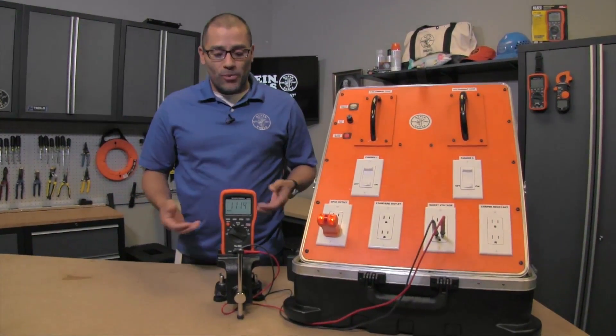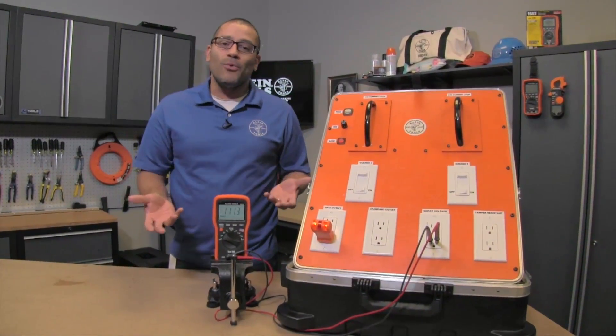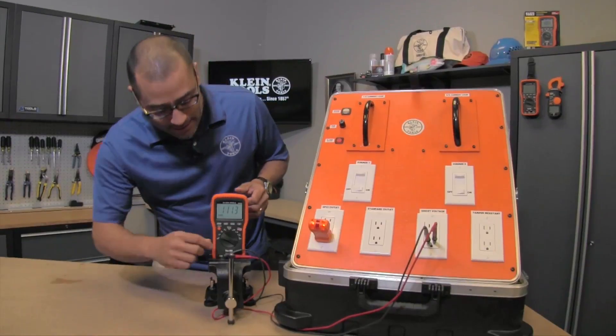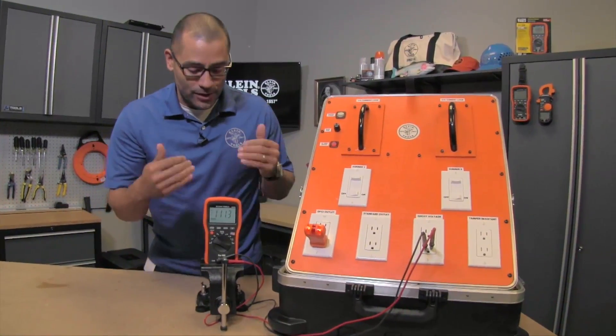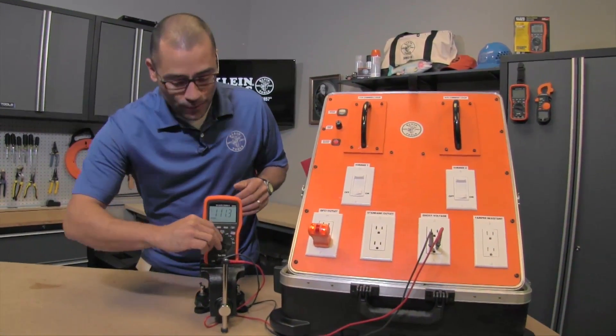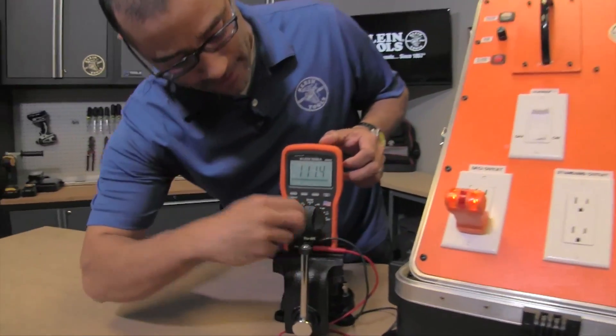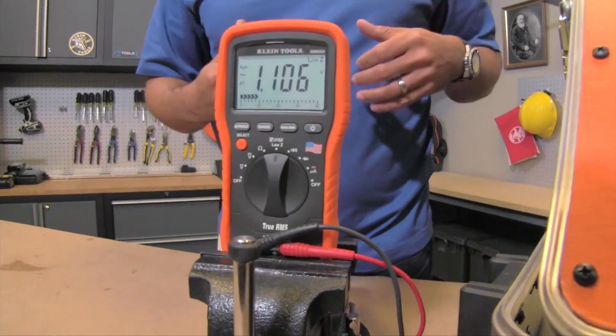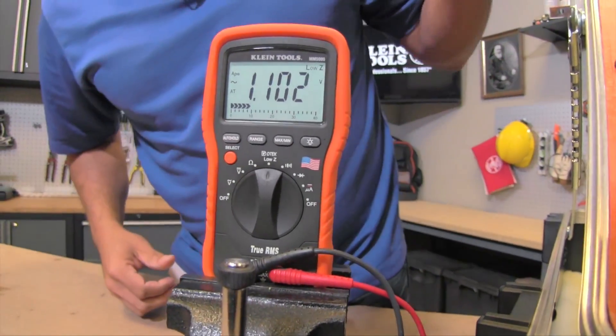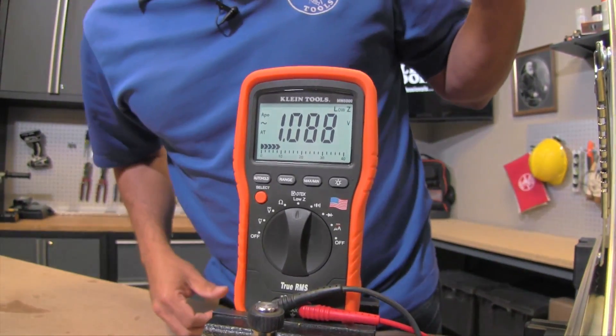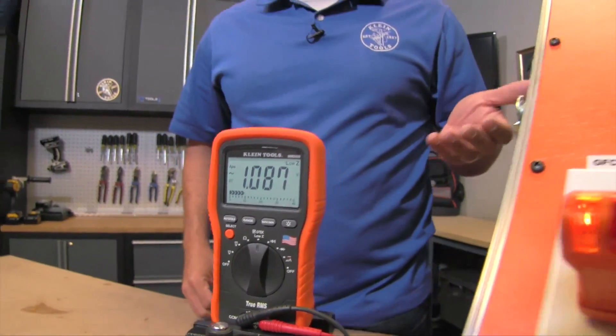So how would you troubleshoot that? Well, low impedance is kind of your way to do that. What it does is it actually simulates a load. There's a thermistor inside the meter, and when you flip to this feature you are actually drawing power now. What you'll notice is out of that same outlet that was reading 109 volts, you'll realize now it's down to about a volt.